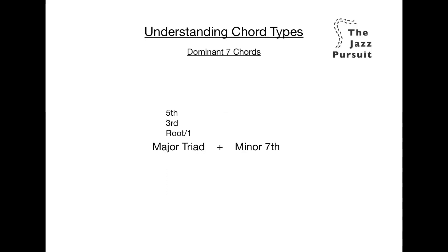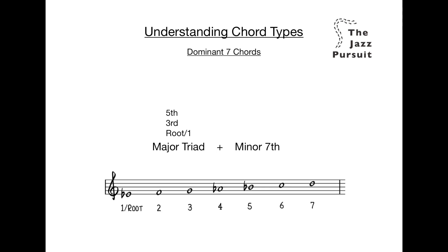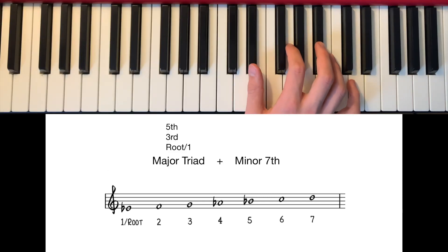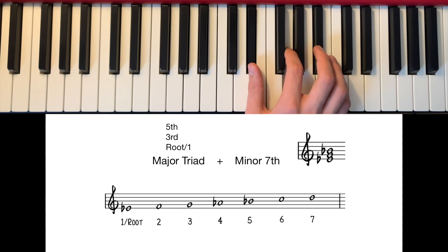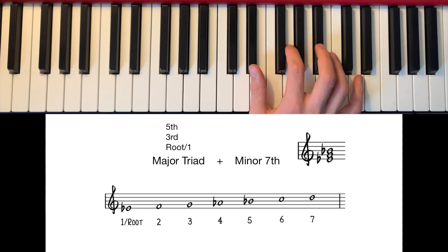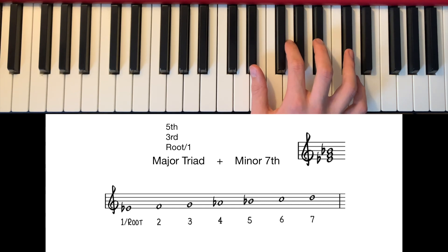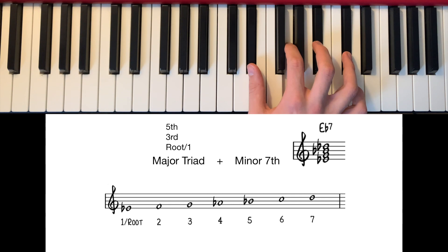Now let's try it in a different key — how about E flat? Here's our E flat major scale, which has a B flat, E flat and A flat. First we need our major triad, the root, 3rd and 5th, which is E flat, G and B flat. Now we need to find our major 7th and flatten it. The major 7 is D, and then we flatten this to turn it into our minor 7, D flat. So our E flat 7 chord consists of E flat the root, G the 3rd, B flat the 5th and D flat the minor 7th.